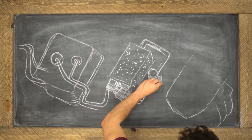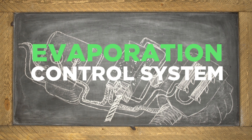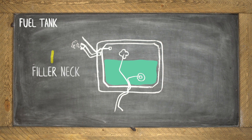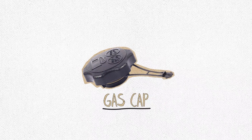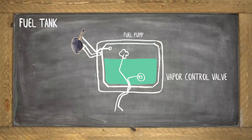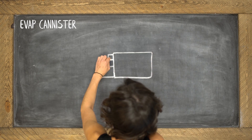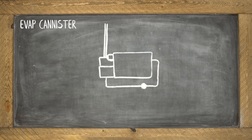What exactly is the EVAP system? Let's draw it out. The EVAP system specifically deals with the vapors of the fuel system. The gasoline has to enter the fuel tank through the filler neck. This is sealed tightly with the gas cap. Once in the fuel tank, the vapors are regulated by the vapor control valve. Once the vapor is released, it enters the evaporation emission canister.